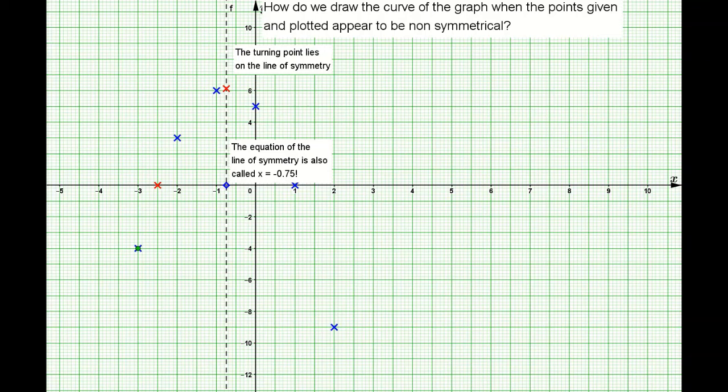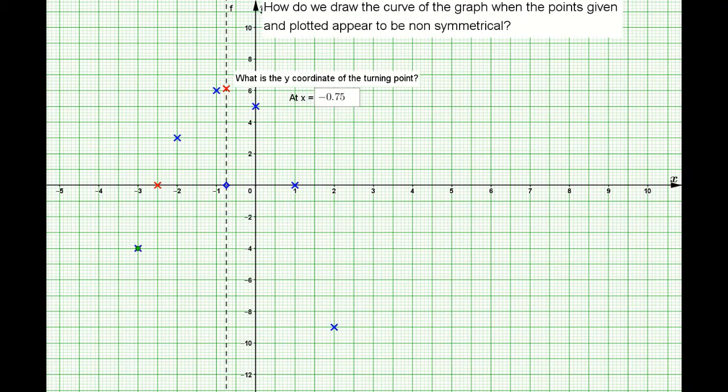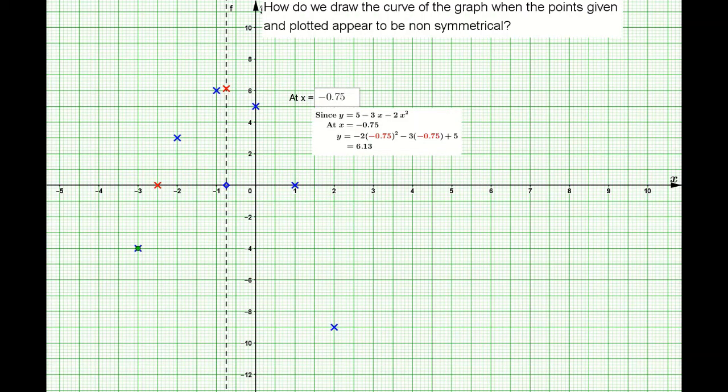The turning point also lies on the line of symmetry. The x-coordinate is negative 0.75. What about the y-coordinate? We can use the function y equals 5 minus 3x minus 2x squared. If you substitute x as negative 0.75, you should get y equals 6.125, so you round off to 6.13. The scale of the graph does not allow you to draw so accurately, but it should be about one tiny square. You can mark the turning point there.